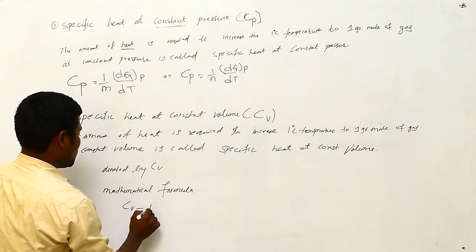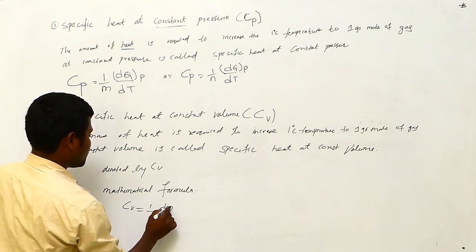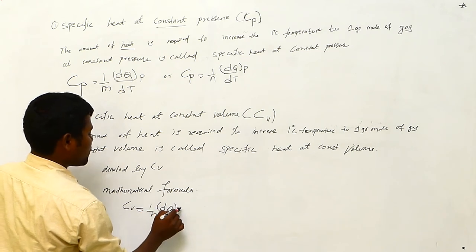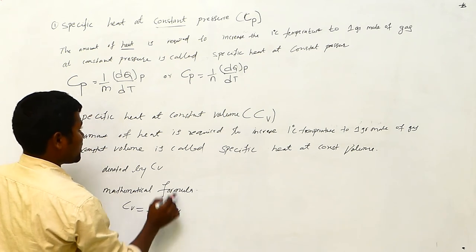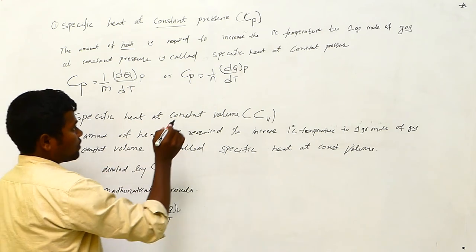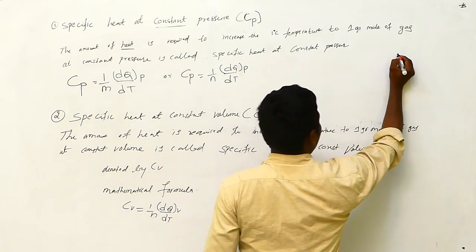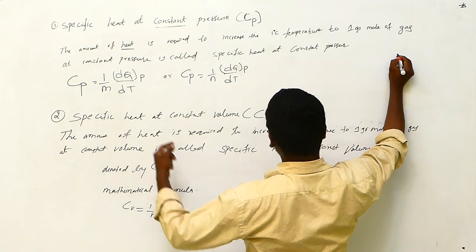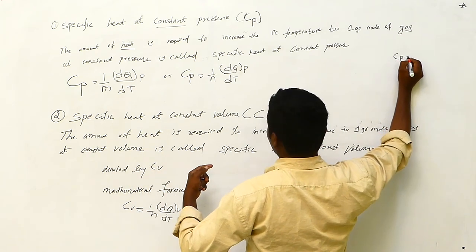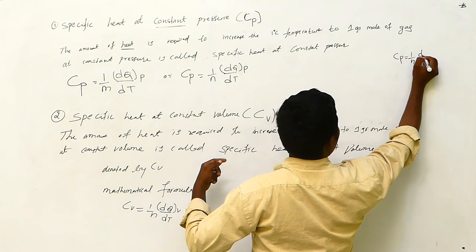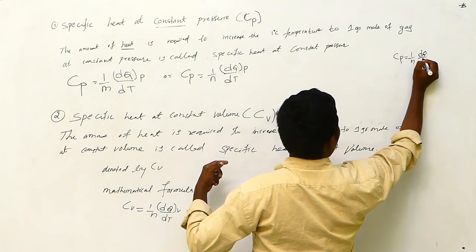C_V is equal to one by N, dQ by dT, at constant volume. Remember this is at constant volume, not constant pressure. These formulas are very important, so remember them very well. C_V = (1/N)(dQ/dT) at constant volume.